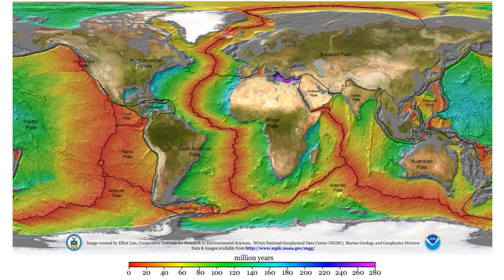The locations of earthquakes provide information on plate tectonics and mantle convection, and measurements of seismic waves are a source of information on the region that the waves travel through. If the density or composition of the rock changes suddenly, some waves are reflected. Reflections can provide information on near-surface structure. Changes in the travel direction, called refraction, can be used to infer the deep structure of the Earth.